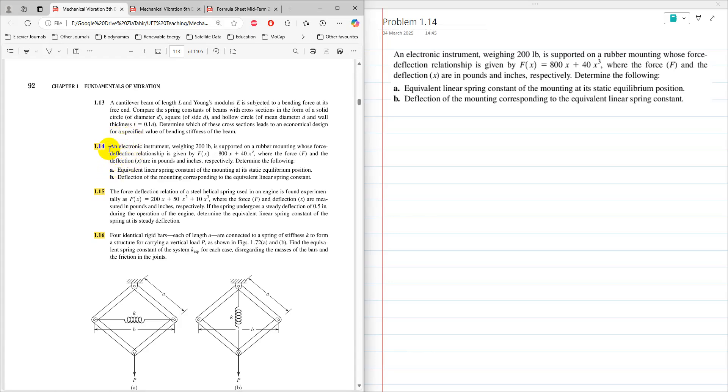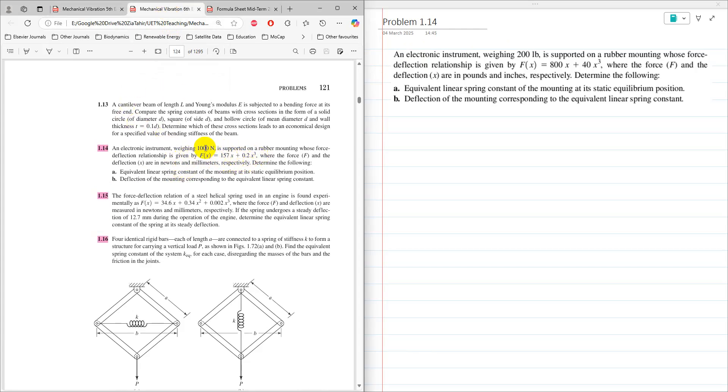That is problem 1.14 and this is a statement from 5th edition. In 6th edition, statement is the same but these loads are in SI units. Here it is in pounds but there in SI units. In this problem, an electronic instrument weighing 200 pounds or 1000 newtons is supported by a rubber mounting whose force deflection relationship is given by f(x) = 800x + 40x³ where force and deflection are in pounds and inches. In 6th edition they are newtons and millimeters.